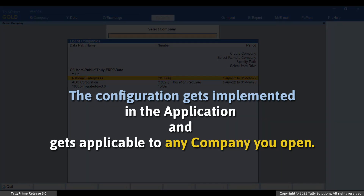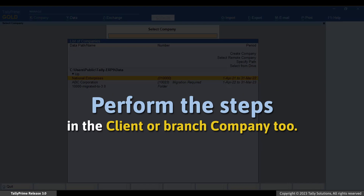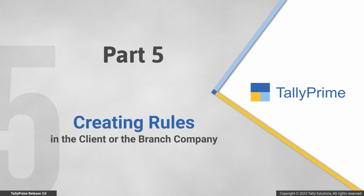This configuration is at the application level and will be applicable to all the companies. So when you open the company of your head office or branch, it will act as server and client both, and you can transfer the data as per your requirement. In the branch company, you will need to perform the steps for client or server configuration. Now let's create synchronization rules in the client or the branch company.